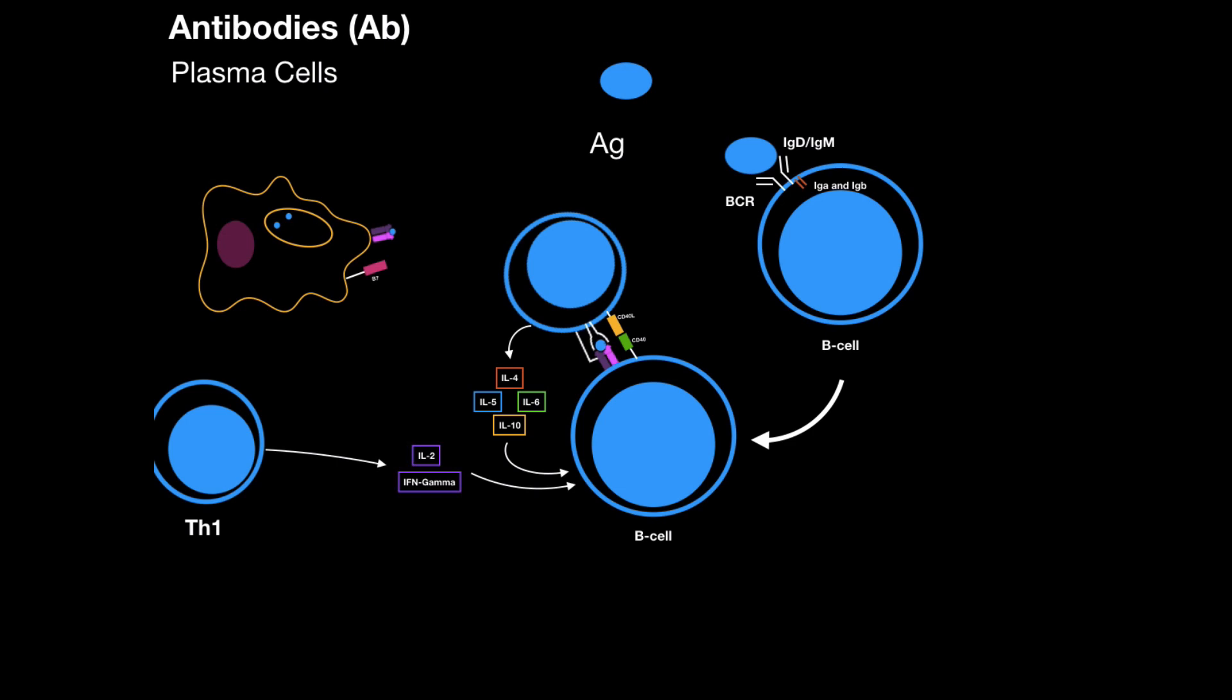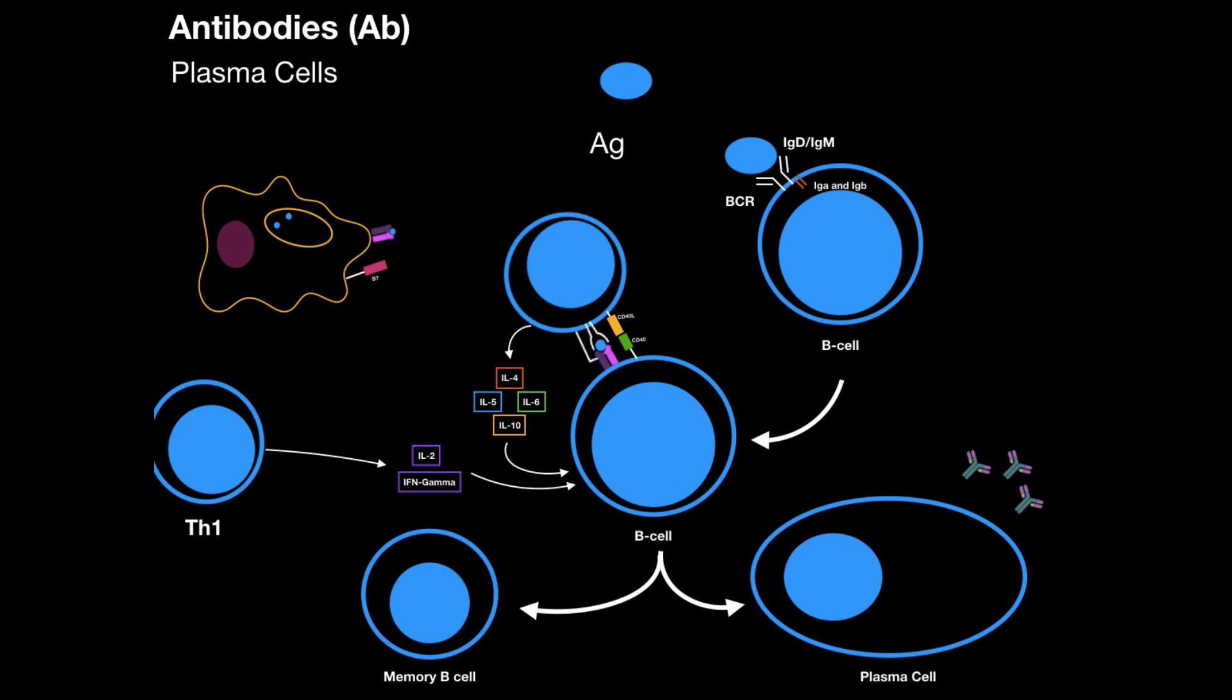If we need more IgG, T helper cell 2 will release more interleukin 4. And even interferon gamma from the T helper cell 1 will trigger the IgG production. So it doesn't really receive all of those at once. Now, this B cell can start to differentiate into a plasma cell which secretes immunoglobulins and also is going to differentiate into a memory B cell in case we were to get exposed to the same type of antigen in the future for a quicker response.